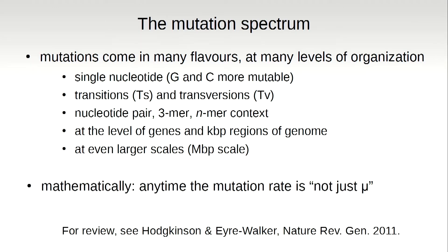The mutation spectrum — this is the obligatory slide about mutations coming in many different flavors and colors and at many different scales. We know that mutation rates are different at single nucleotide scales, that transitions and transversions happen at different frequencies. There's the infamous CpG transitions that are very common in humans. Nucleotide pairs can matter, and then we can extend that to 3-mers, 5-mers, and 7-mers. The context in which the nucleotide occurs can change the mutation rate. At larger scales, mutation rates differ in coding regions, in genes and gene bodies, and at even larger scales, in possibly megabase-pair regions of the genome.